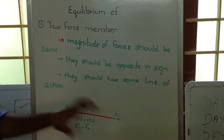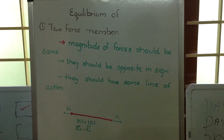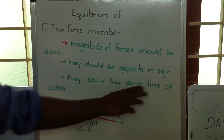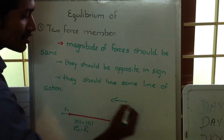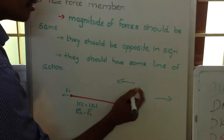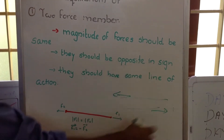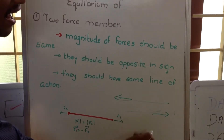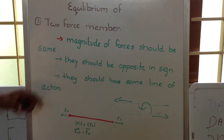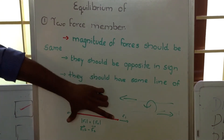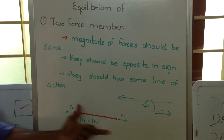The second condition is that the forces should be opposite in direction — that is, vector F1 equals negative vector F2. The last condition is that they should act along the same line of action. If two forces act along two different lines of action as shown in the figure, they will form a couple, and we would need another torque to compensate for that couple.